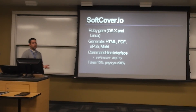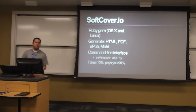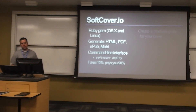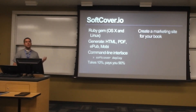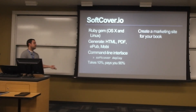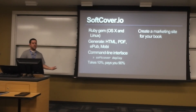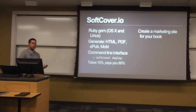People who go to softcover.io can buy your book there and they only take 10% — they'll pay you 90%. You're actually able to list whatever price you want, so if you want to list it for more than Amazon's $200 maximum, you can do that.